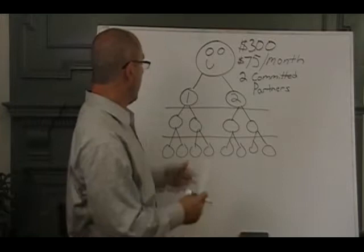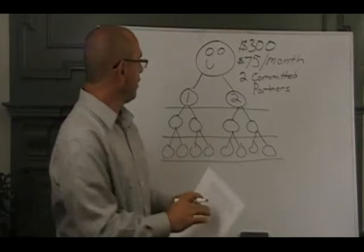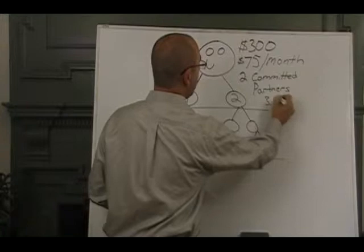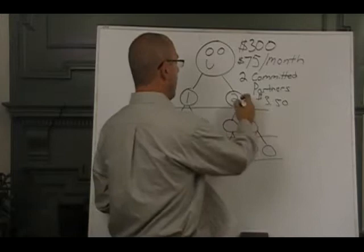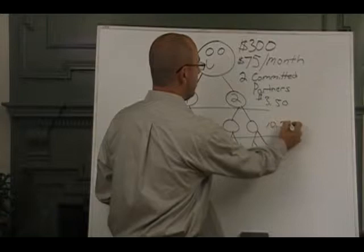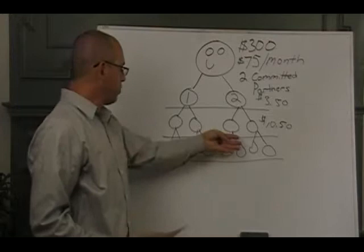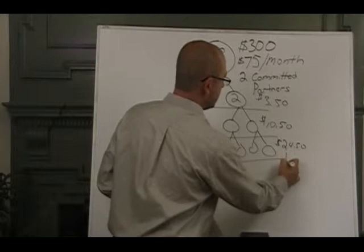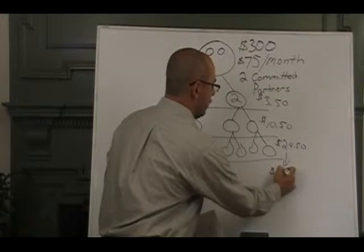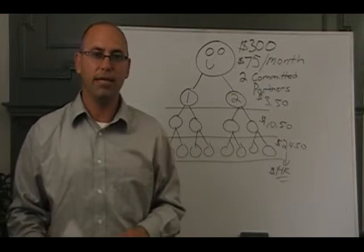So what happens is this keeps duplicating every 30 days. When this happens the first time and you bring in your two business partners, you made $3.50 residual. Then those two people bring in their two business partners, and then your check is going to go to about $10.50 a month. And then those four business partners bring on their two business partners. They can be anywhere in over 60 countries. Then your check goes to $24.50. And when you run that out for 12 months, that's just over $14,000 a month.